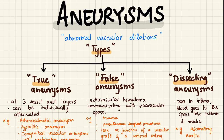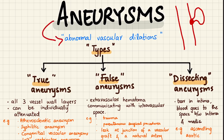An aneurysm is an enlargement of an artery caused by weakness in the arterial wall. This focal weakening will cause the formation of a bulge or dilation — that's why we can call aneurysms abnormal vascular dilations. There are three types of aneurysms based on how they appear and what their wall consists of: true aneurysms, false aneurysms, and dissecting aneurysms.